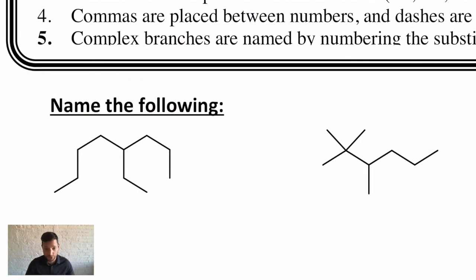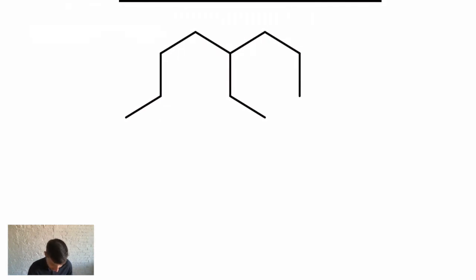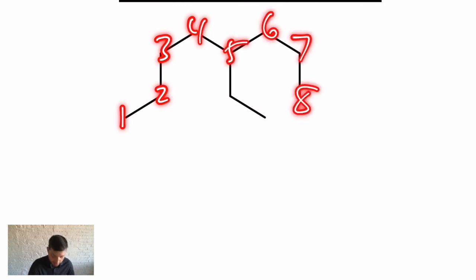Starting right now. So here is an alkane, and the first thing we want to do is find how many carbons the longest contiguous chain of carbons is in a sequence. And I count 1, 2, 3, 4, 5, 6, 7, 8 carbons. So this is an octane.